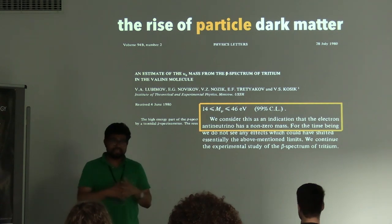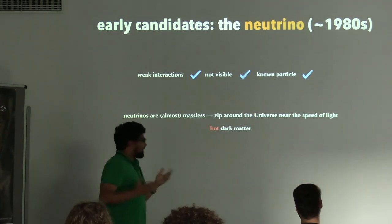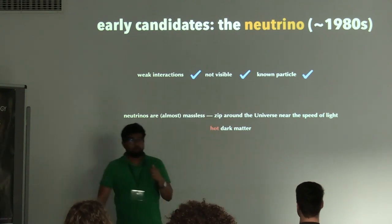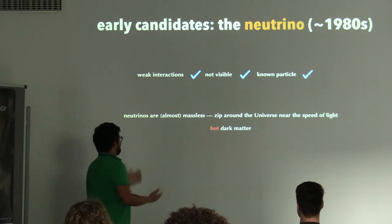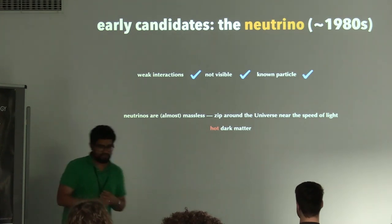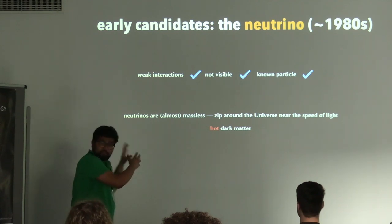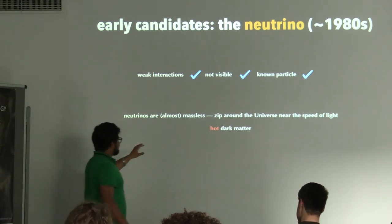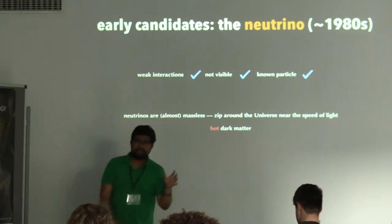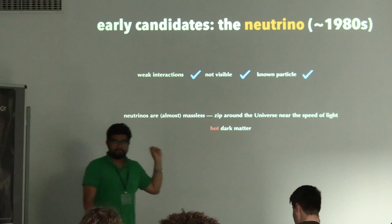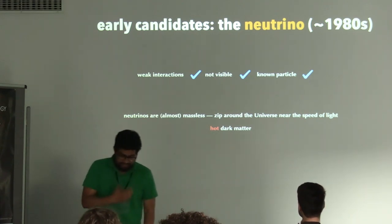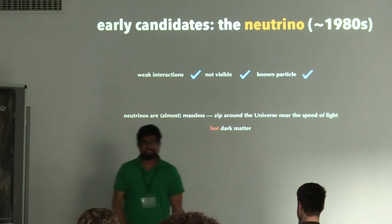This gave rise to the idea that dark matter could be neutrinos — they are dark in the sense of being invisible, we know they exist, and they have very weak interactions. However, at just a few electron volts, neutrinos would act essentially as massless particles, zipping around the universe at nearly the speed of light. People therefore termed this 'hot dark matter' — hot because the thermal velocities are high.